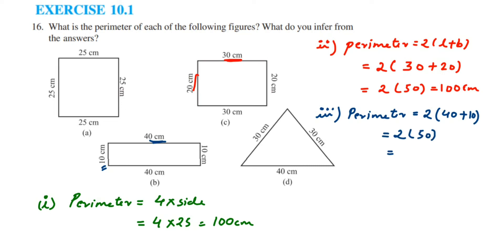Now the next one is a triangle. We know that perimeter is the sum of all the sides, so perimeter equals 30 plus 30 plus 40. 30 plus 30 is 60, 60 plus 40 is 100, which equals 100 centimeters.